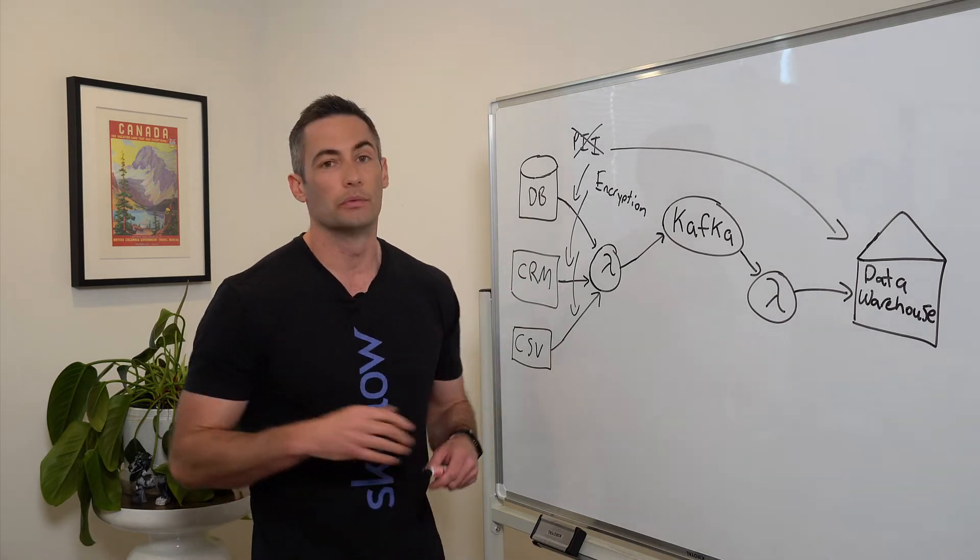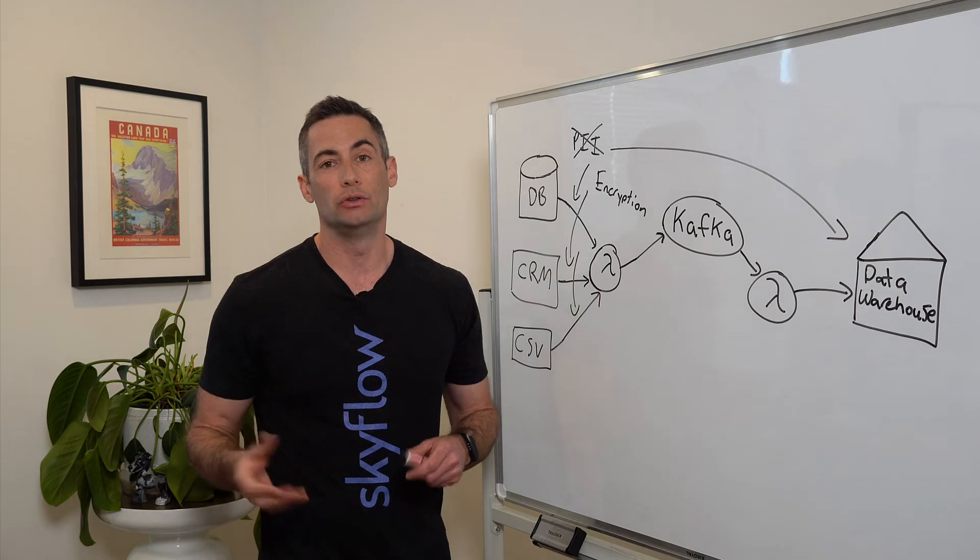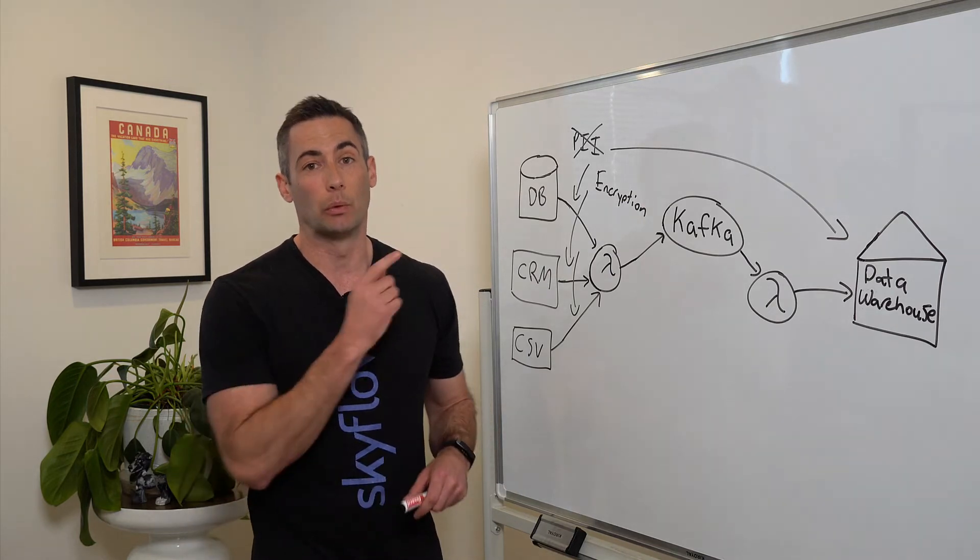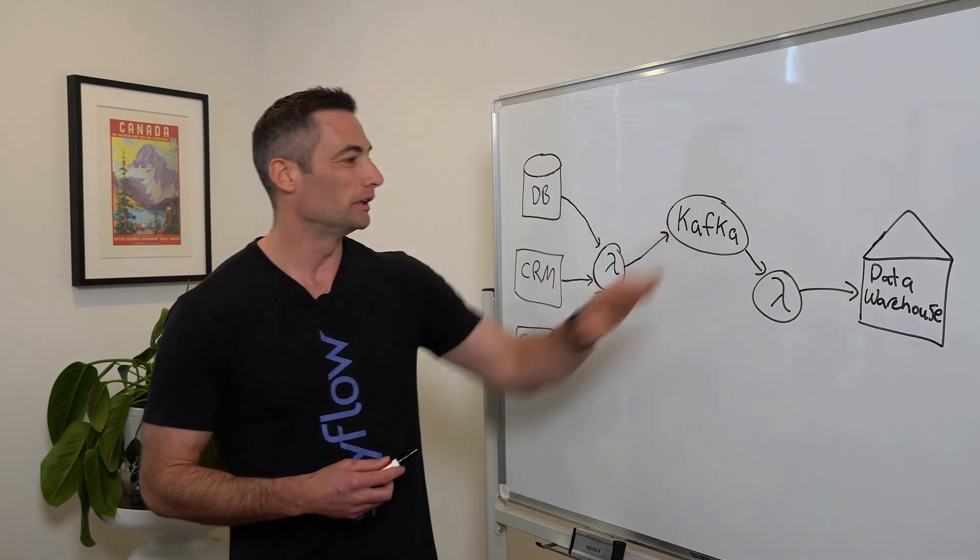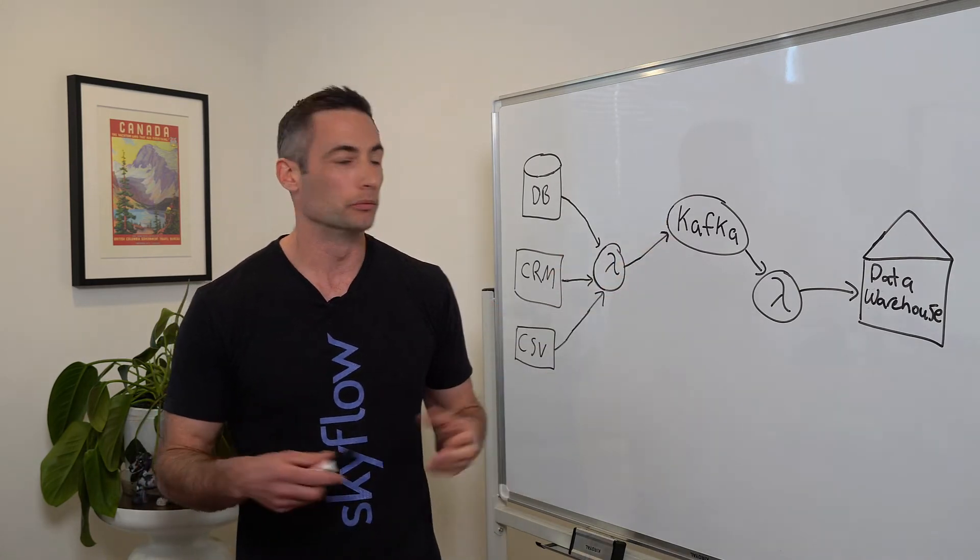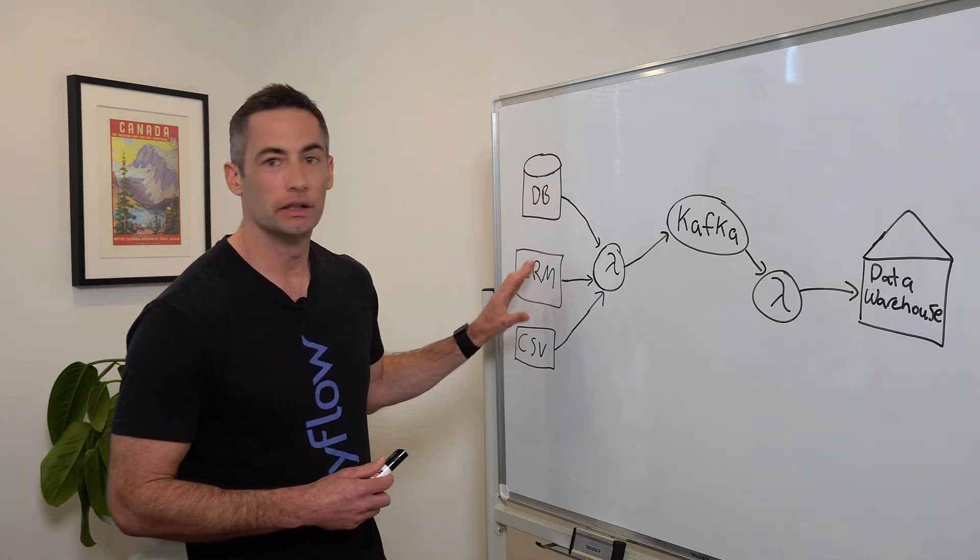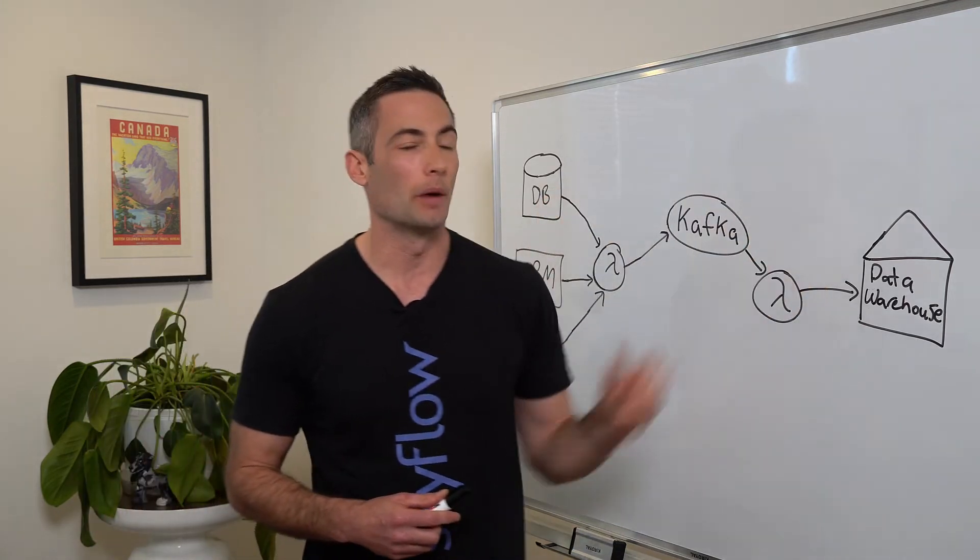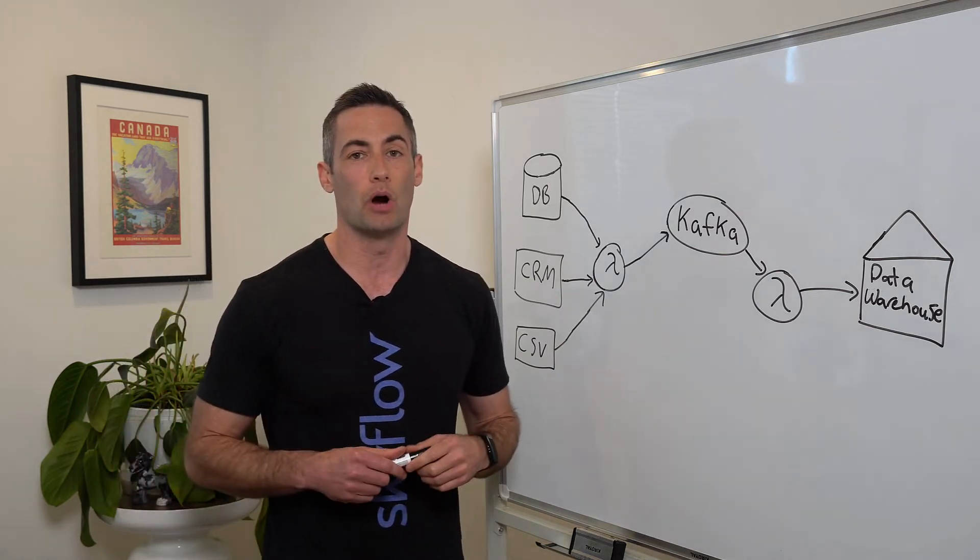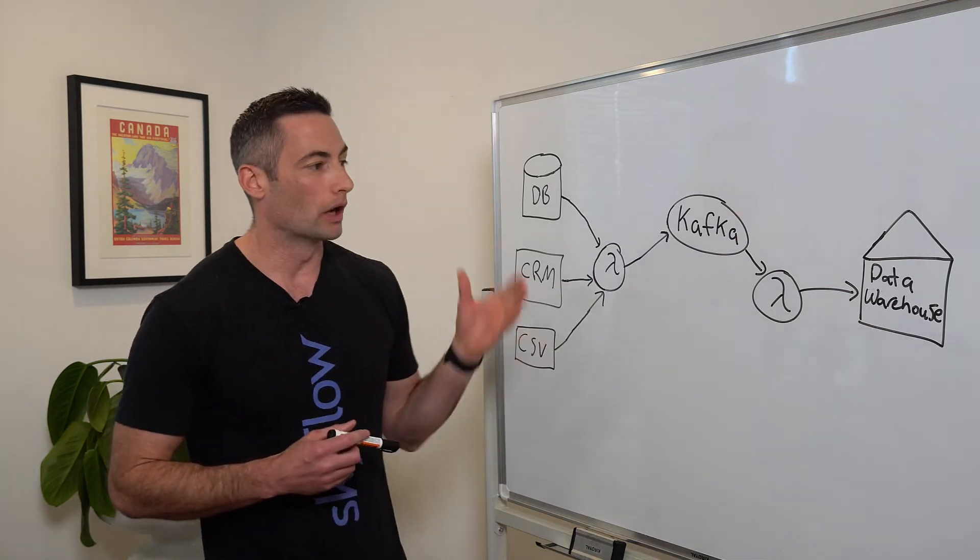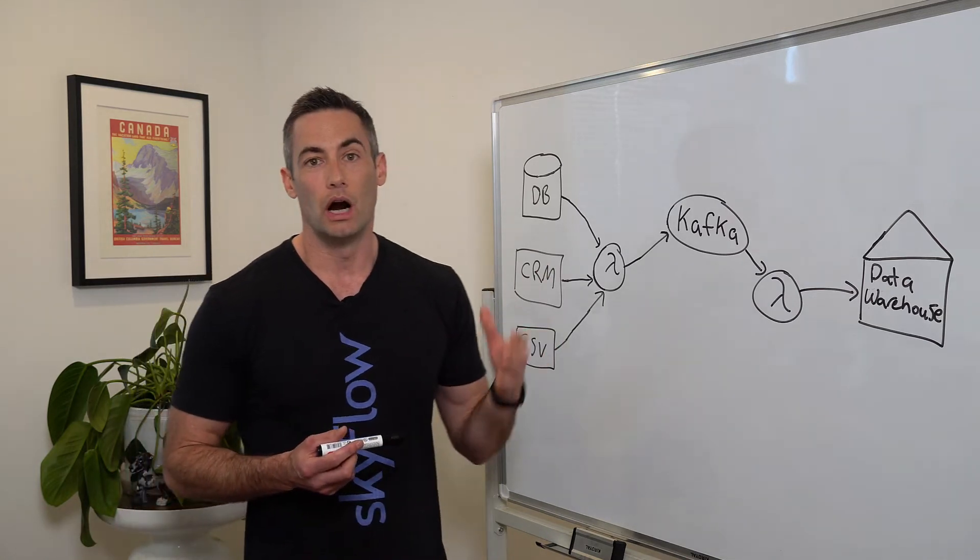So how can we solve all the problems in a way that doesn't add a lot of complexity to this? Well, we can do that using a data privacy vault. And that's what we're going to get into next. All right, we're back. All I've done is clean up the diagram a little bit so we have a little bit more room to work with. And just to recap where we were, we have a bunch of PII coming in from our data sources. It's being copied down into our data warehouse. We want to stop that from happening because that introduces a lot of problems. So how can we do that? Well, we can introduce a data privacy vault to store our customer data.